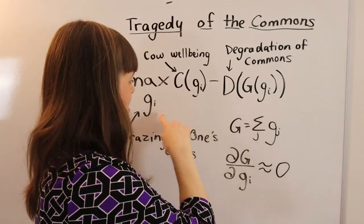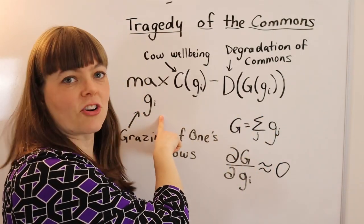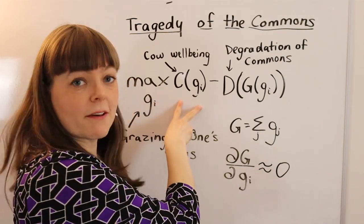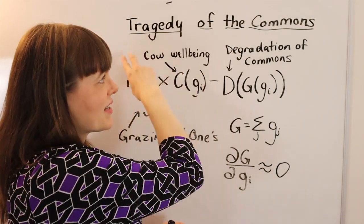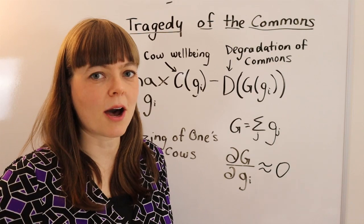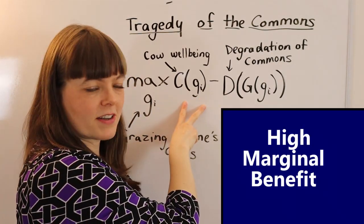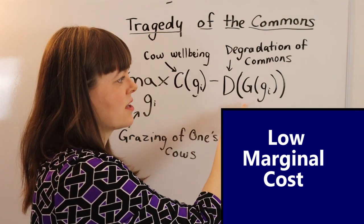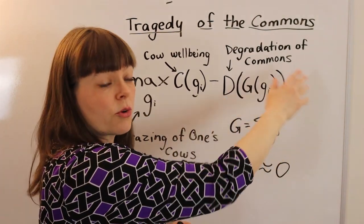So the cost to you personally of grazing your cows, this is really, really small. And the benefit is really big. And that's the characteristic of the tragedy of the commons, is that there's a high benefit to you, and there's a low cost of your personal cows to you or to the group.